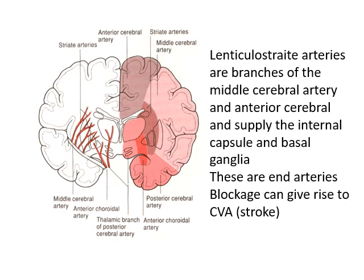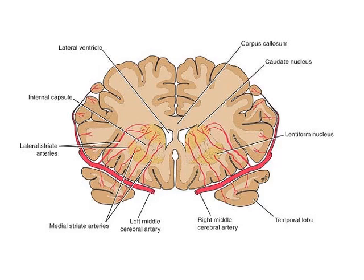The lenticulostriate arteries are branches of the middle cerebral artery and anterior cerebral artery; they supply the internal capsule and the basal ganglia and are end arteries. If even a tiny blockage occurs in one of these lenticulostriate arteries, that area of the brain becomes hypoxic. You can have a cerebrovascular accident (CVA) if this happens. These tiny infarcts can occur due to blockages in the lenticulostriate arteries. The diagram shows the branches and the structures supplied, including the middle cerebral artery and the lenticulostriate branches which pierce into the cerebral hemispheres to supply deep structures and the internal capsule.